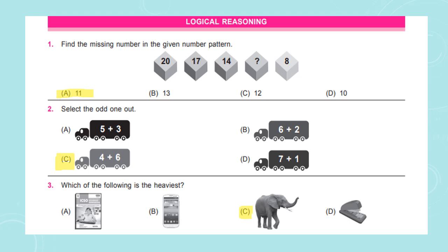In question number 2, we have to select the odd one out. From the options, we first find the sum. 5 + 3 = 8, 6 + 2 = 8, 4 + 6 = 10, and 7 + 1 = 8. Options A, B, and D give the sum as 8, whereas C gives 10. So the odd one is Option C. In question number 3, we have to find the heaviest — Option C, the picture of an elephant, is the heaviest.